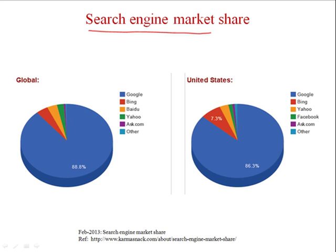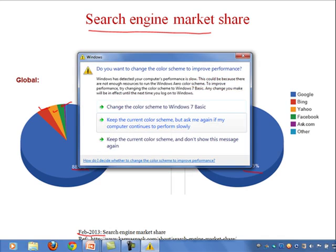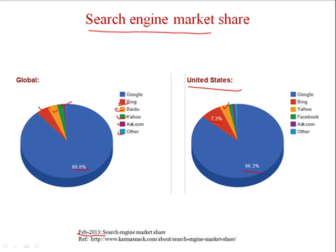From the latest survey of February 2030, the search engine market share shows that globally Google holds 88.8 percent of the entire search market. In second place is Bing, third is Baidu (a Chinese search engine), and Yahoo is in fourth position, followed by Ask.com and others. Considering the United States specifically, Google holds 86.3 percent and Bing holds 7.3 percent, with Yahoo in third position.